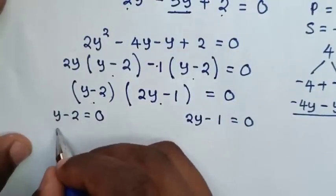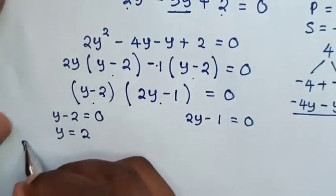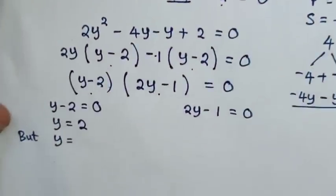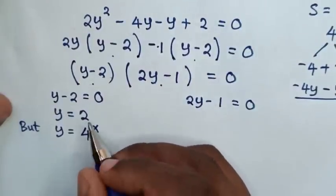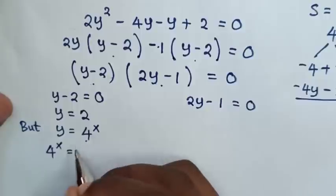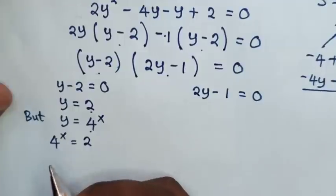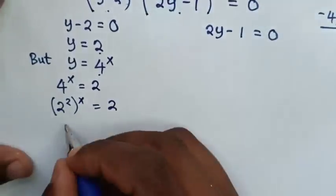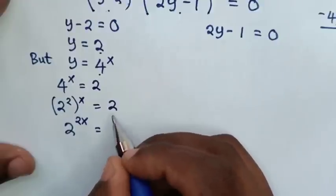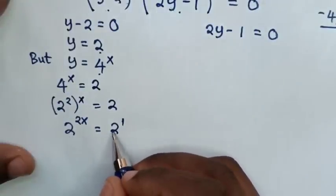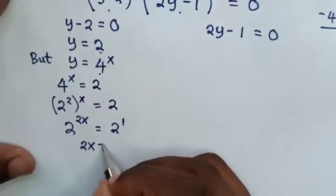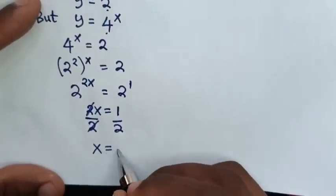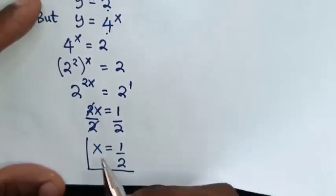From the first solution, y equals 2. Since y equals 4 power x, we have 4 power x equals 2. Writing 4 as 2 squared: (2 squared) power x equals 2, so 2 power 2x equals 2 power 1. Comparing powers with the same base: 2x equals 1, so dividing by 2, x equals one half. This is one value of x.